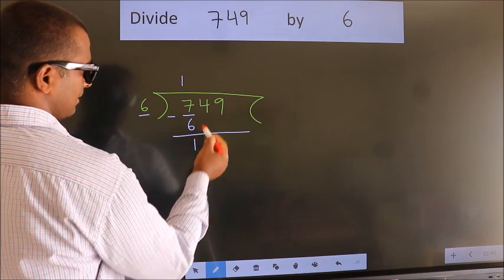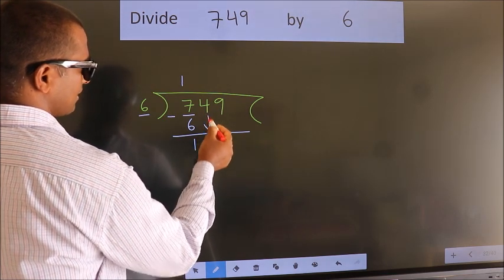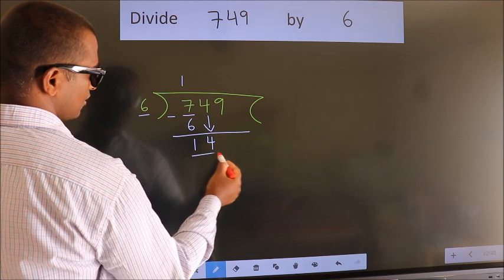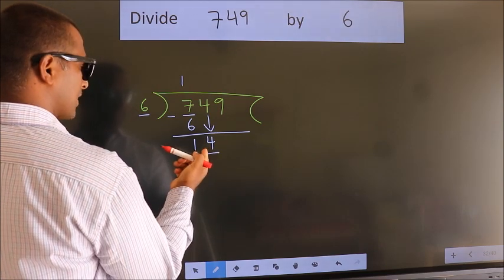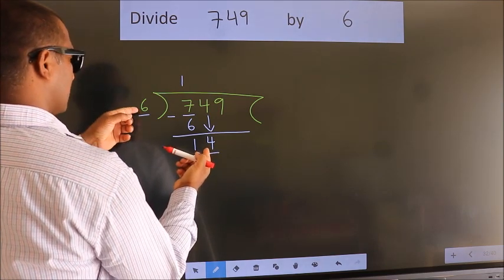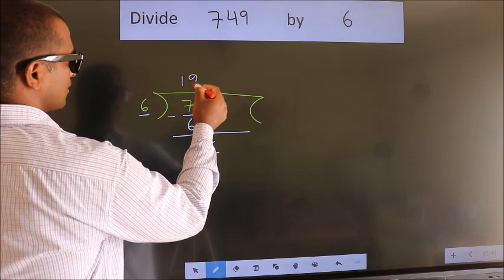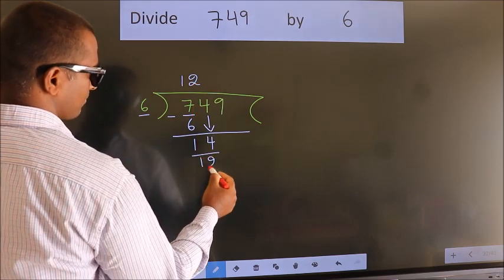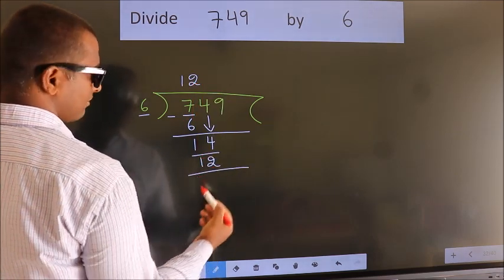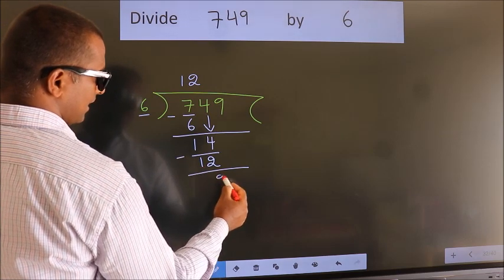After this, bring down the beside number. So 4 down. So 14. A number close to 14 in 6 table is 6 twos, 12. Now we subtract. We get 2.